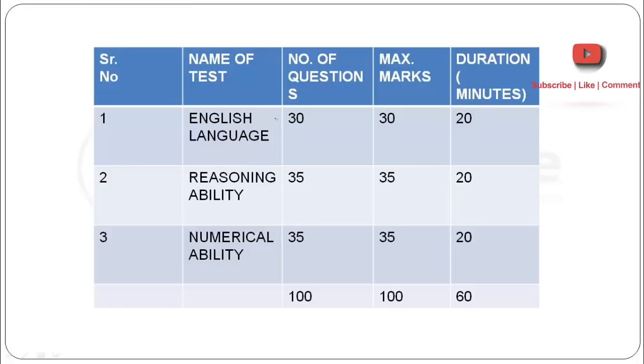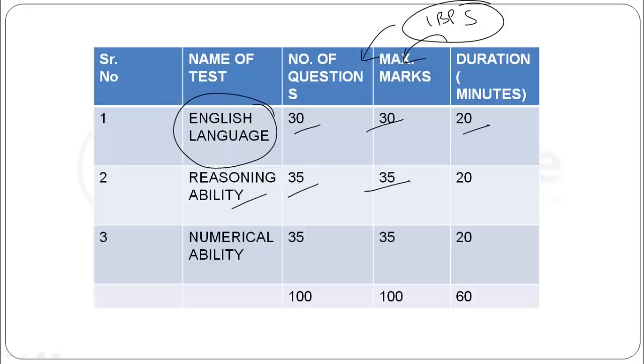First of all, we should look at what was the pattern. If you can see the pattern here, our exam has been conducted by IBPS, so the pattern is like a banking pre-exam. English: 30 questions, 30 marks, 20 minutes. Reasoning ability: 35 questions, 35 marks, 20 minutes. Numerical ability: 35 questions, 35 marks, 20 minutes. Overall 100 questions, 100 marks, and total time was 60 minutes divided into 3 sections.